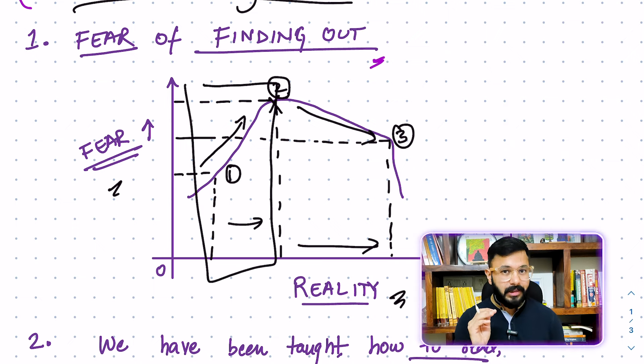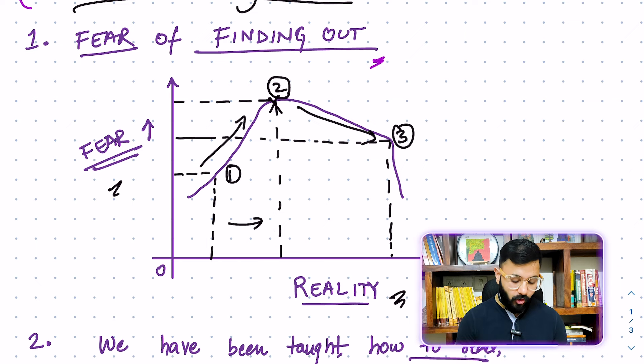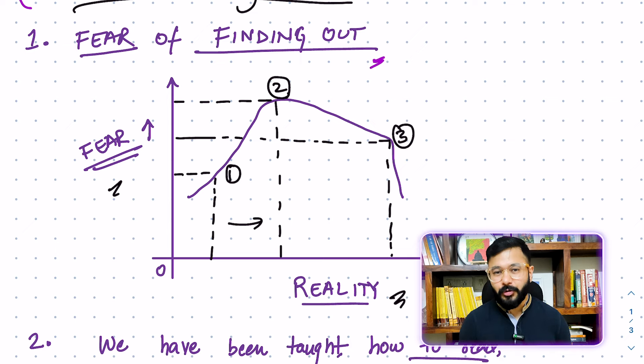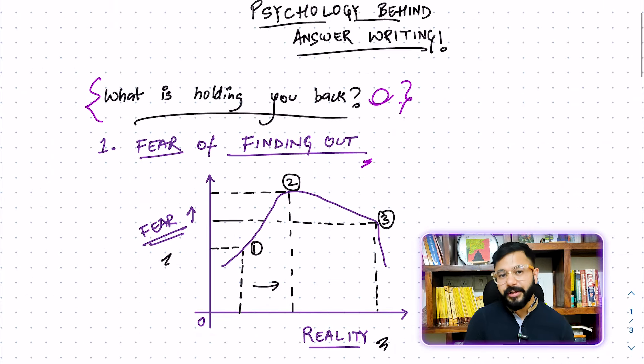But the moment you cross that extent, that level where the fear has already reached its maximum level, that is where you realize that the fear is starting to go down. And the more you're moving towards reality, the more you're writing your answers, they're getting better because the fear is falling down. So the first point to understand behind what is holding you back is the fear of finding out your real self, and answer writing is one very potent tool of telling you where do you stand today. Because when you write something down, then it is becoming permanent. And when it is becoming permanent, then lying to yourself becomes all the more difficult.